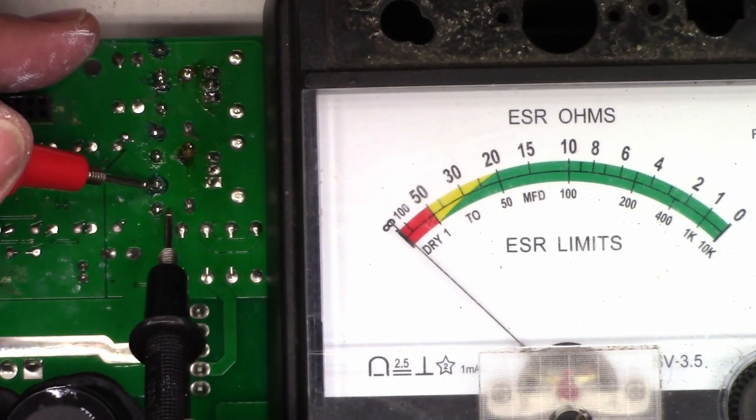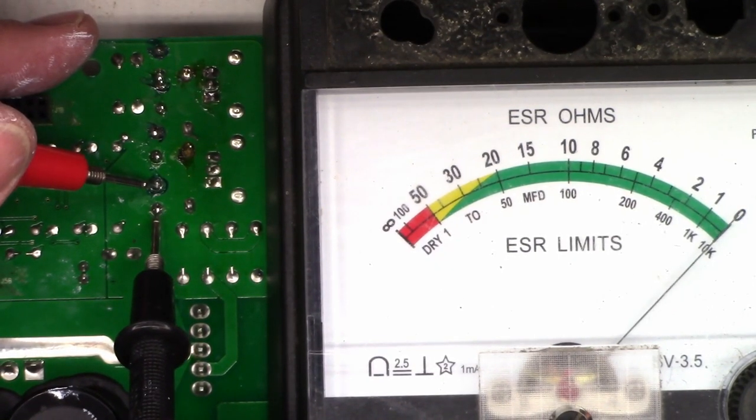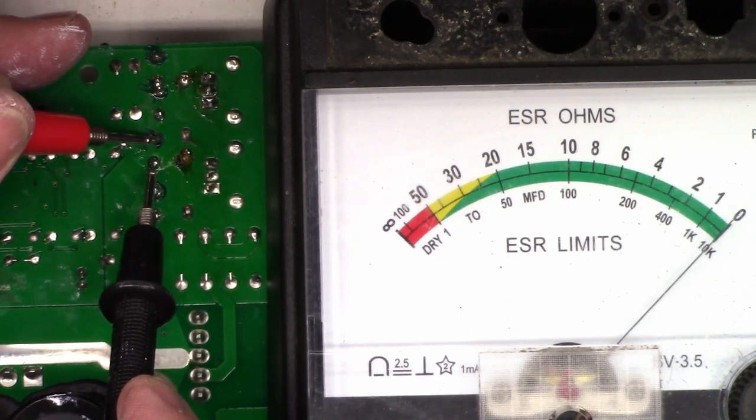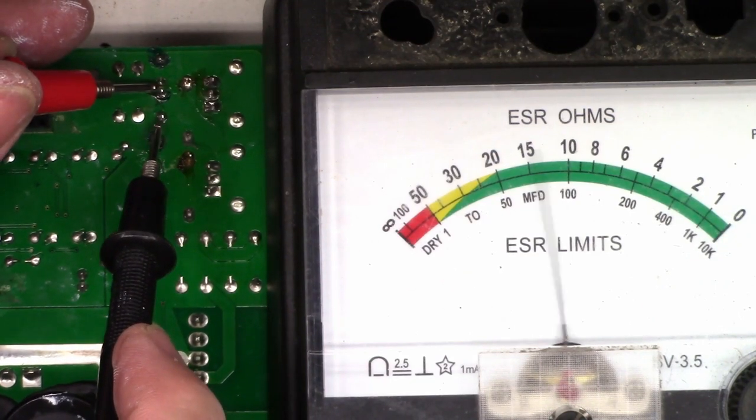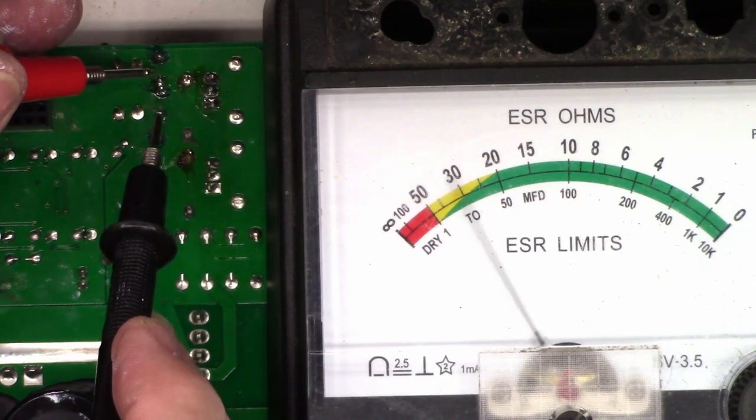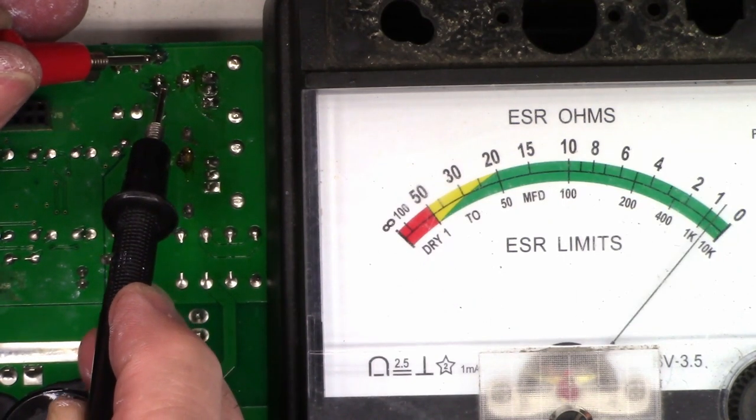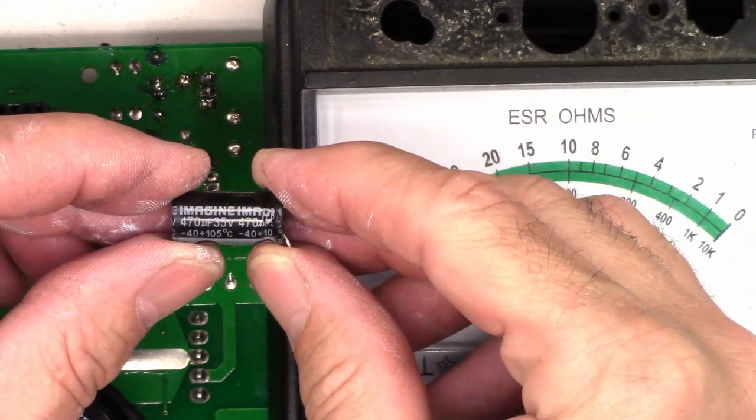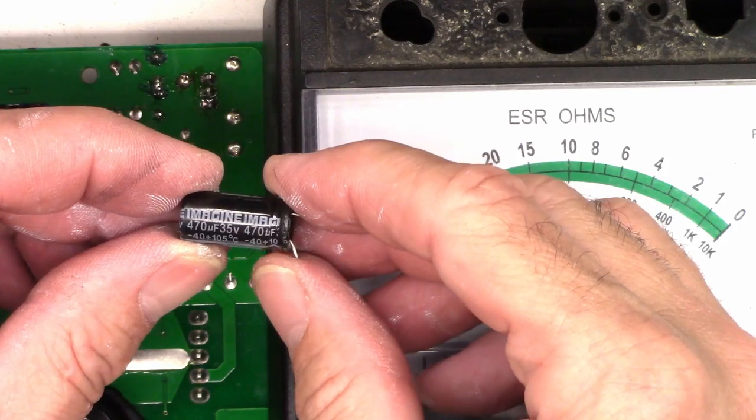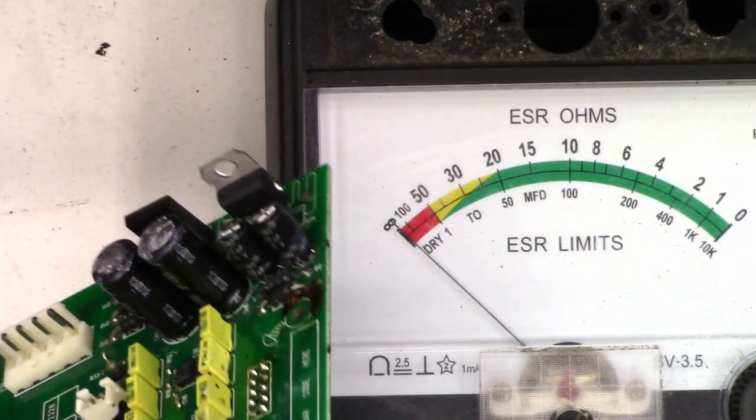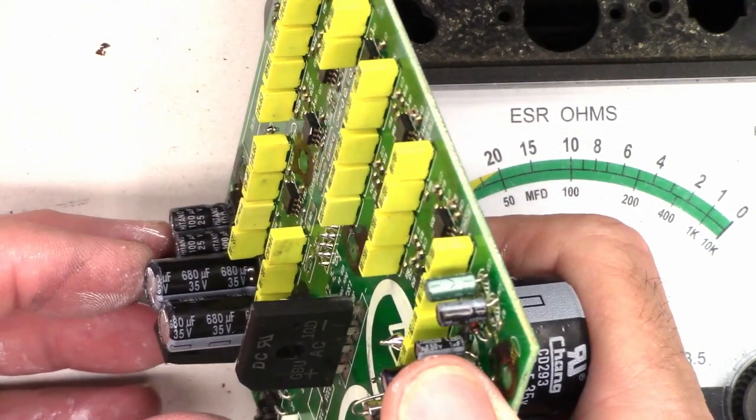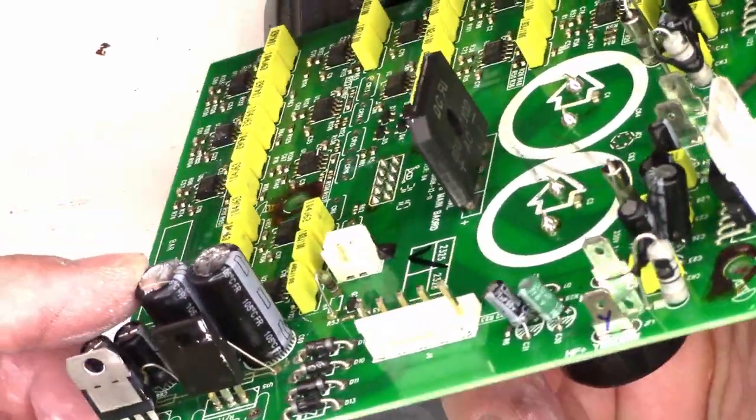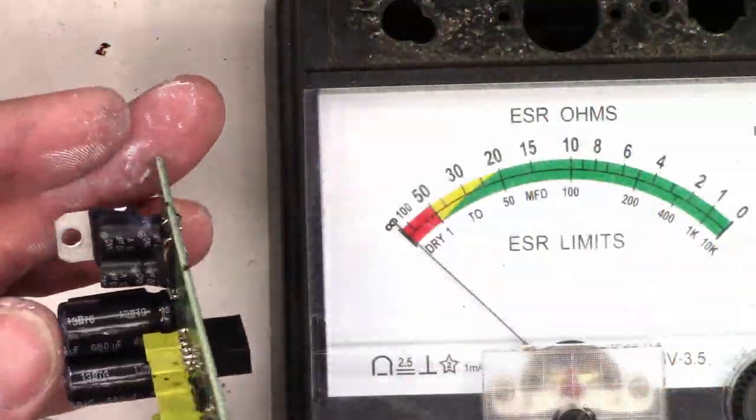New caps are in. Let's go ahead and give them an ESR. Input filter, pretty darn close to zero. Input filter, same thing, close to zero. These are the output filters. About a quarter ohm. That's perfectly fine. And about a quarter ohm. The original capacitors were 470 at 35 volts. I didn't have any 470s at 35. So I ended up putting in some 680s at 35. That'll be perfectly fine. They're good quality caps. I believe they might be Nichicons. I'm not quite sure. But they're going to do just fine.